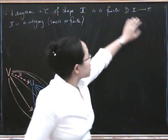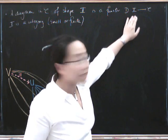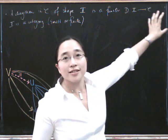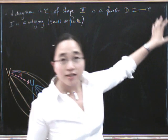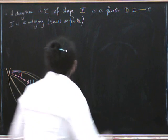So what does this functor do? Well it takes this category and it kind of puts it inside C. So what it's doing there is it's identifying the diagram in C that you're interested in. For example,